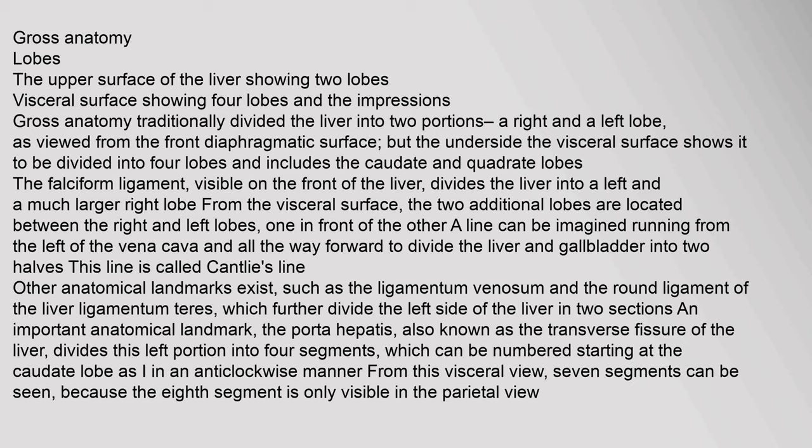The falciform ligament, visible on the front of the liver, divides the liver into a left and a much larger right lobe. From the visceral surface, the two additional lobes are located between the right and left lobes. A line called Cantlie's line runs from the left of the vena cava forward to divide the liver and gallbladder into two halves. The porta hepatis, also known as the transverse fissure, divides the left portion into four segments numbered starting at the caudate lobe as I, in an anti-clockwise manner.